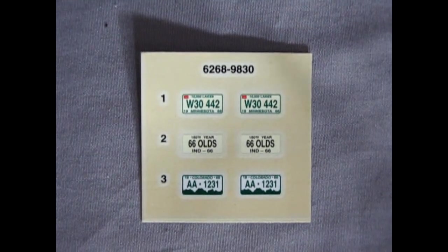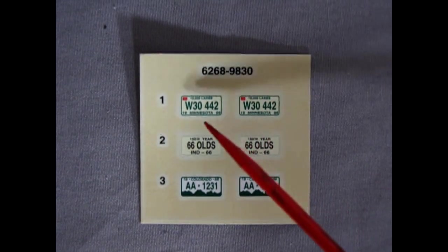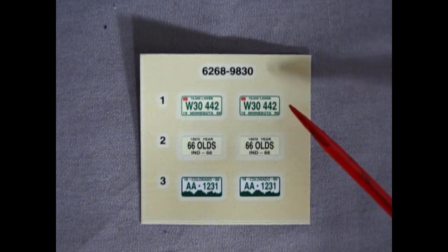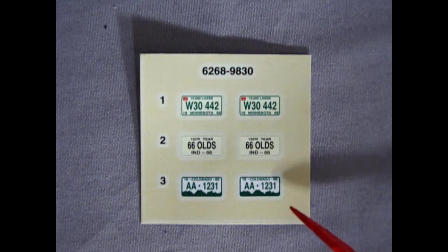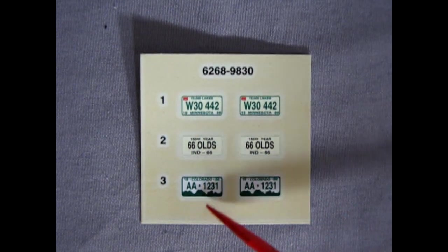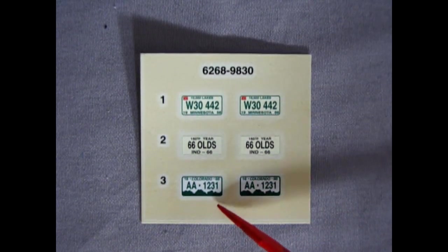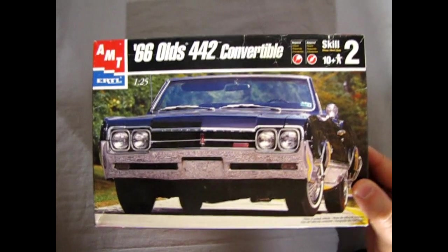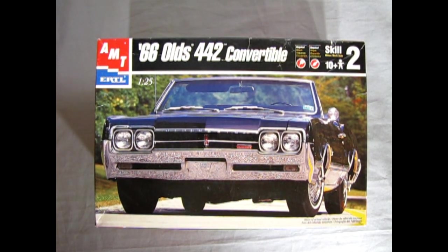Finally, we get a look at our decal sheet which is not very big. It just consists of three license plates: six of course for the front and the back. Here we have Minnesota, Indiana, and Colorado. Of course these are great, nice little license plates: W3442, 66 Olds, and AA1231. So again, nice decals. And I hope you enjoyed this look at our 1966 Oldsmobile convertible by AMT Ertl.